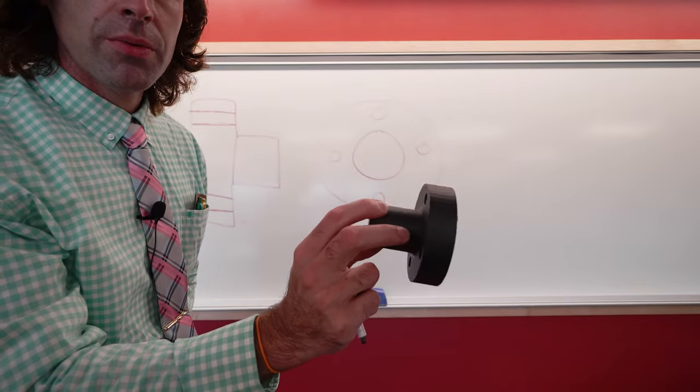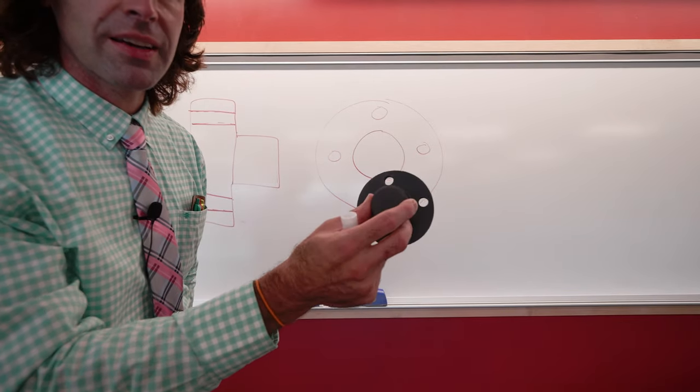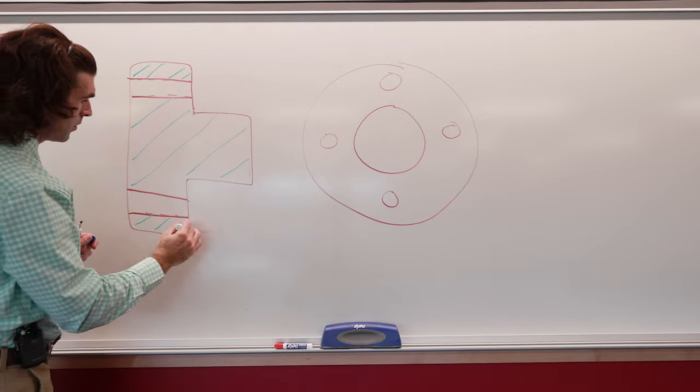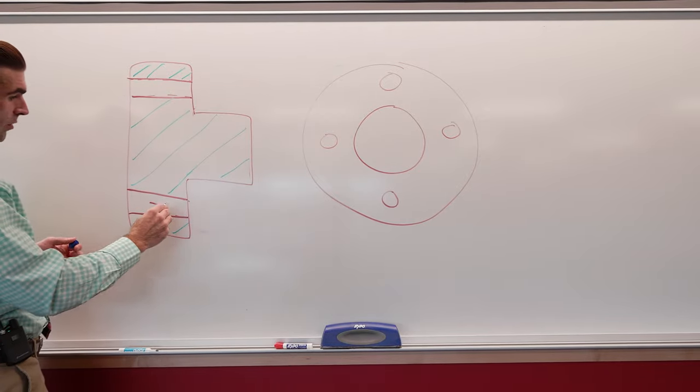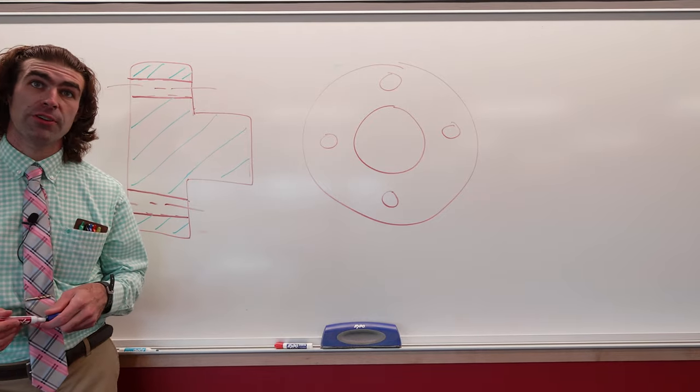We take the front view and then we take that left view. So you can kind of see it right there. Now we can just section the part, add our center lines and we're good to go with that full section.